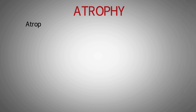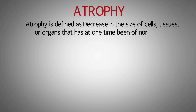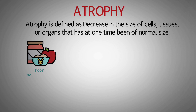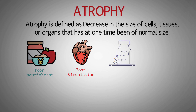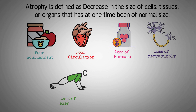In this video we are going to study about atrophy and its types. Atrophy is defined as decrease in the size of cells, tissues, or organs that has at one time been of normal size. Causes of atrophy include poor nourishment, poor circulation, loss of hormonal support, loss of nerve supply to the target organ, disuse or lack of exercise, or disease intrinsic to the tissue itself.